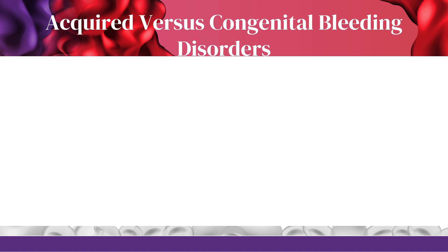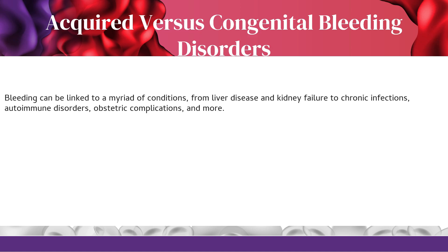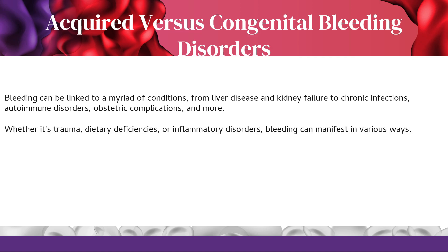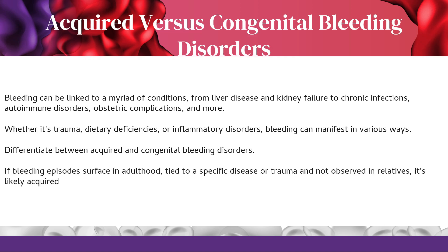Bleeding can be linked to a myriad of conditions — from liver disease and kidney failure to chronic infections, autoimmune disorders, obstetric complications, and more. Whether it's trauma, dietary deficiencies, or inflammatory disorders, bleeding can manifest in various ways. If bleeding episodes surface in adulthood, tied to a specific disease or trauma and not observed in relatives, it's likely acquired.